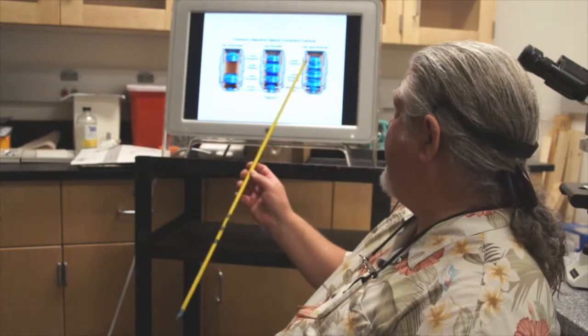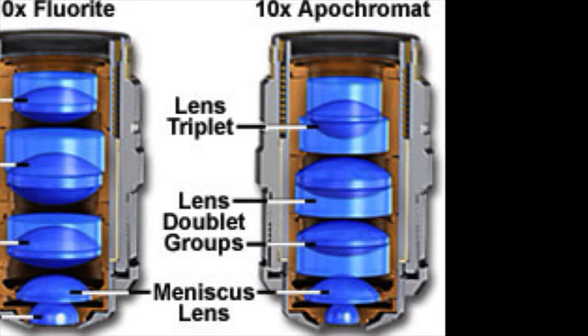Manufacturers have developed objectives called plan apochromats. It's a plan objective, which means it's flat from edge to edge, and it is an apochromat, so it's corrected for chromatic aberration. All your colors are magnified to the exact same plane, so you get sharp, crisp, flat images which are beautiful for fluorescence microscopy. Here you see an apochromat objective, but we're using plan apochromats, which are corrected not only for chromatic aberration but for flatness of field as well.